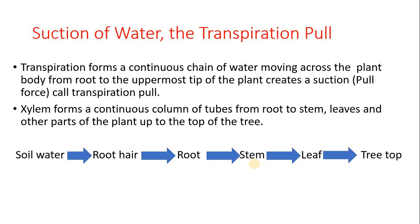Next we will study about the transpiration pull. Transpiration forms a continuous chain of water moving across the plant body from root to the uppermost tip of the plant. This creates a suction or pull force called transpiration pull. Xylem forms a continuous column of tubes from root to stem, leaves and other parts up to the top of the tree. Soil water is taken up by the root hair, goes into the root, from the root to the stem, from the stem into the leaf and then to the tree top. The water due to transpiration pull is pulled up to the top of tall trees.